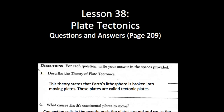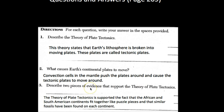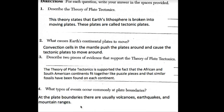Now let's get started with the questions and answers. Question one asks to describe the theory of plate tectonics: the theory states that Earth's lithosphere is broken into moving plates called tectonic plates. Question two: what causes Earth's continental plates to move? The convection cells in the mantle push the plates around and cause the tectonic plates to move. Question three: the theory of plate tectonics is supported by the fact that the African and South American continents fit together like a puzzle and that similar fossils have been found on each continent. You could also mention the matching rock layers.